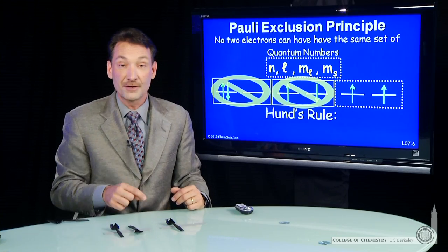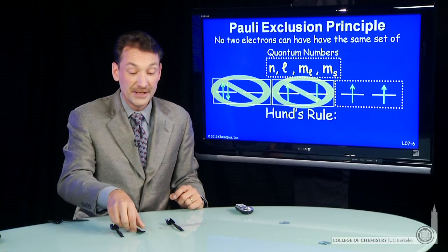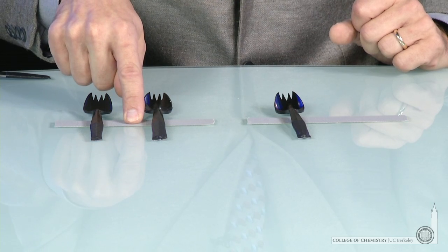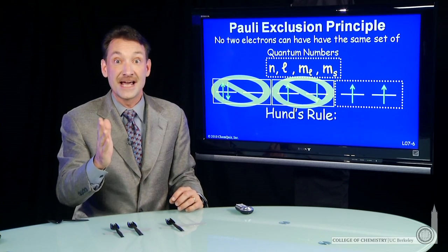So the next electron will go in anti-parallel. And I go in anti-parallel because if I go in parallel here, these electrons will have exactly the same quantum numbers. And the Pauli exclusion principle says I cannot do that.